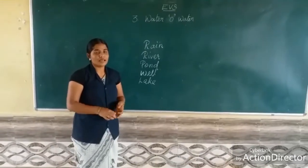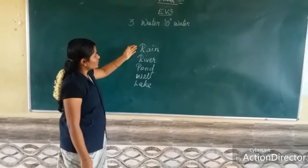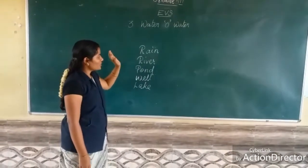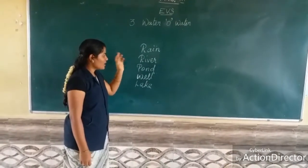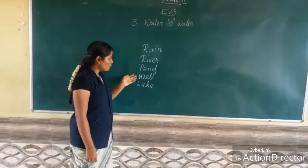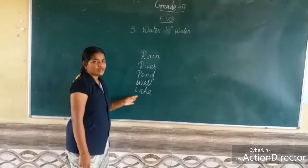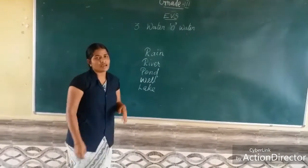The main source of water is rain. Rain water fills up rivers, ponds, wells, and lakes. This water is used by us.